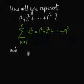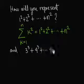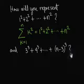What if it is 3 to the cube plus 4 to the cube plus 5 to the cube plus up to n minus 3 to the cube.